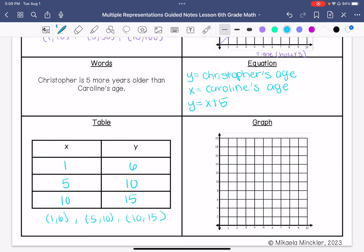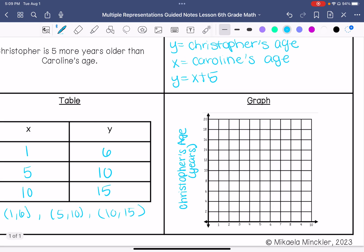So y-axis is Christopher's age, and that's in years. X-axis is Caroline's age.